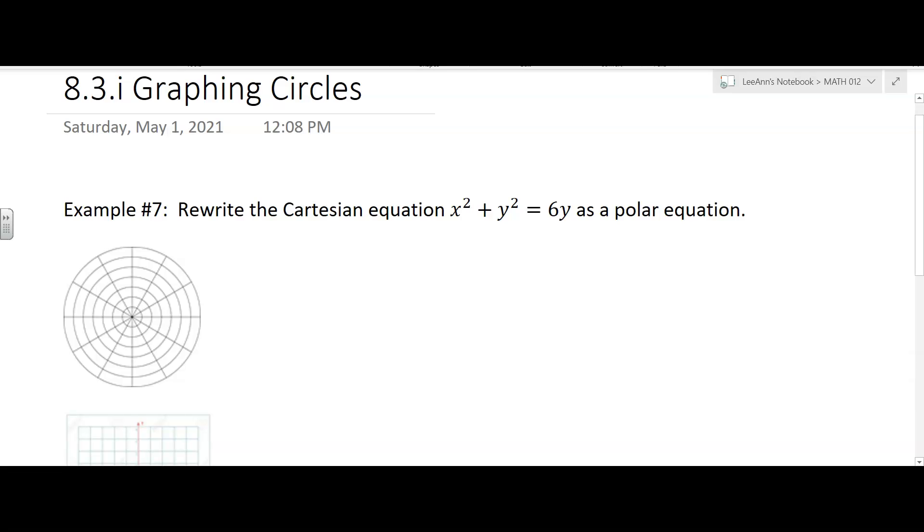Okay, so we have another Cartesian equation and we want to write it as a polar equation. We're going to make life a little bit easier here. The x squared plus y squared, that's just r squared. Remember we have that statement that x squared plus y squared equals r squared, so we can just replace that.